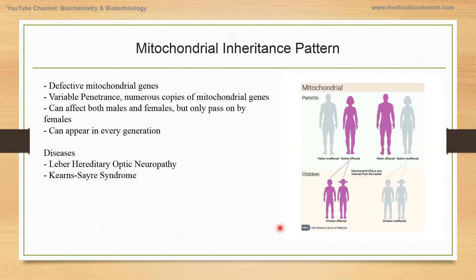Finally, the mitochondrial inheritance pattern: if there are defective mitochondrial genes, that can affect both males and females, but they can only be passed through females because mitochondria are only present in the ovum. When the father is affected, it cannot be inherited by the progeny. Diseases include Leber's Hereditary Optic Neuropathy and Kearns-Sayre syndrome.